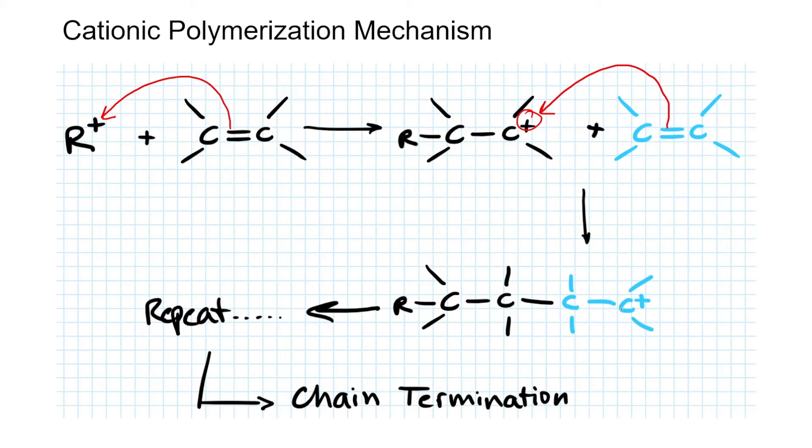And then once again, you form a C plus over here, carbocation intermediate, that will then go ahead and react with another one of your monomers in solution. And then this continues over and over again. And this is essentially the propagation step until you get to chain termination.